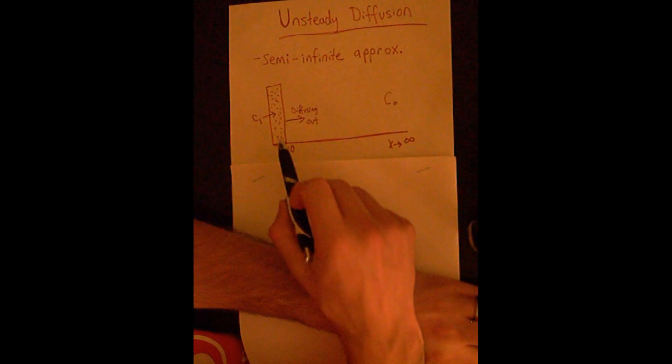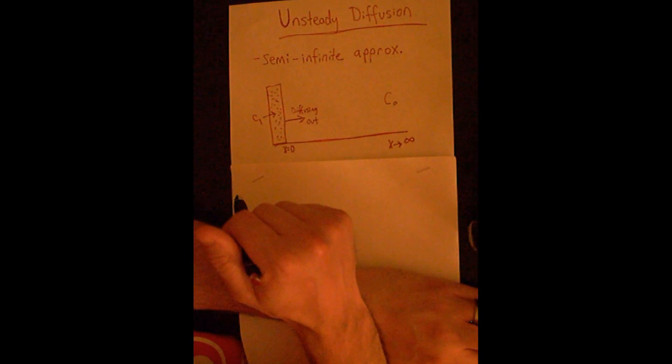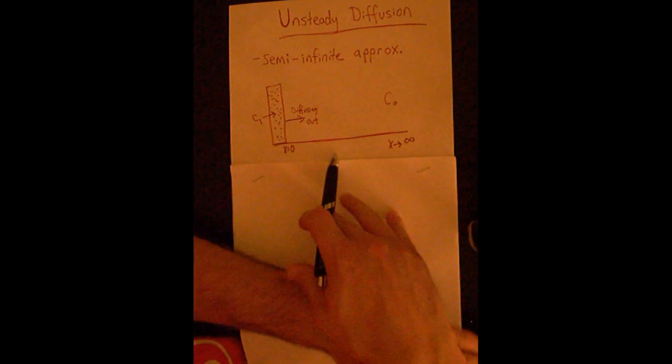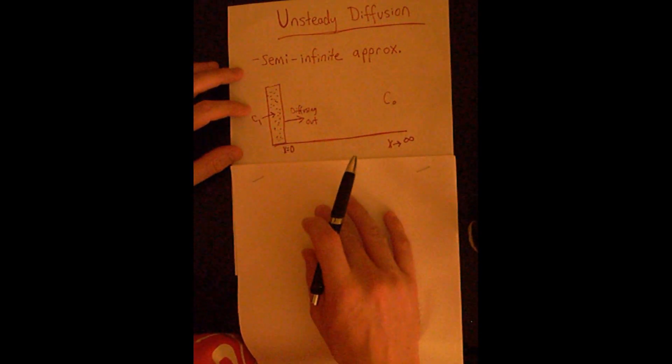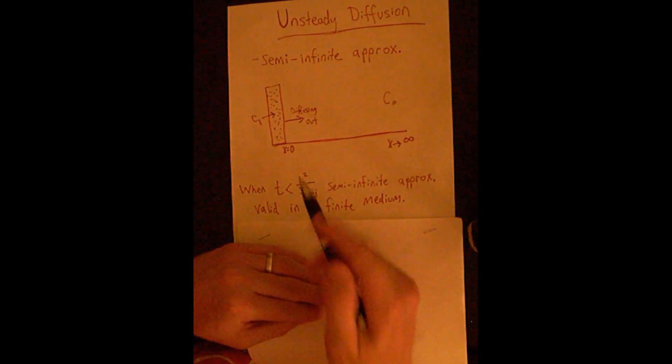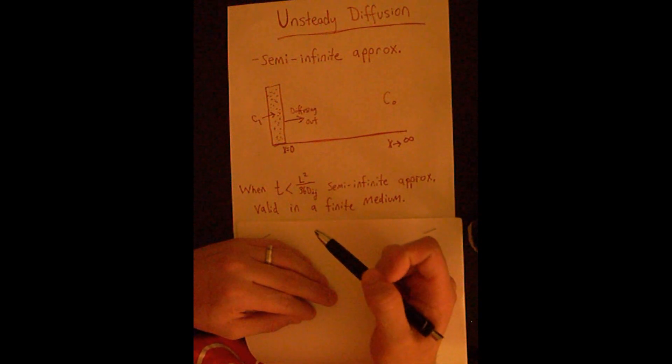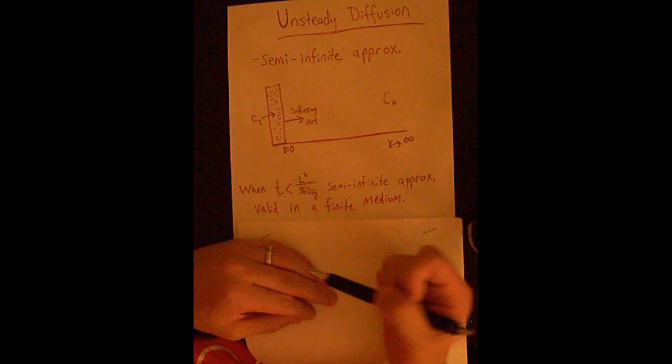So really in short times, in short diffusion distances, we can approximate an unsteady diffusion case in a finite media as being a semi-infinite situation. There's a certain easy rule to this: when the time is less than L squared divided by 36 D_ij, the semi-infinite approximation is valid in a finite medium.